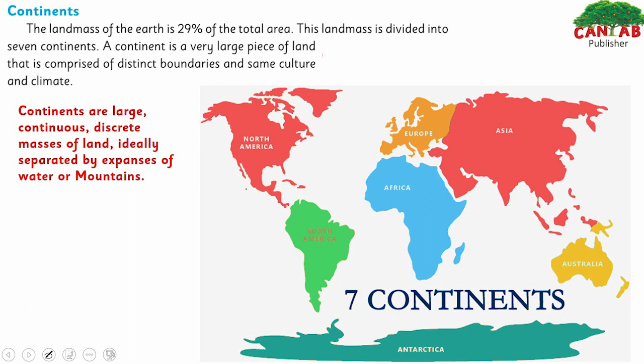Continents are the land masses of the Earth. They make up 29% of the total area of the Earth. This land mass is divided into seven continents.